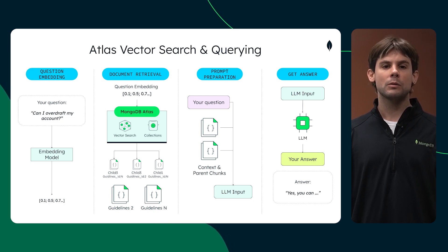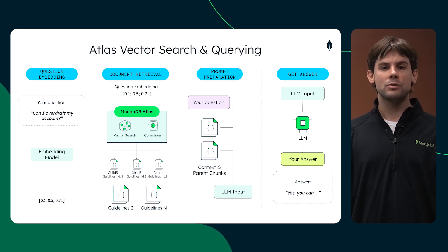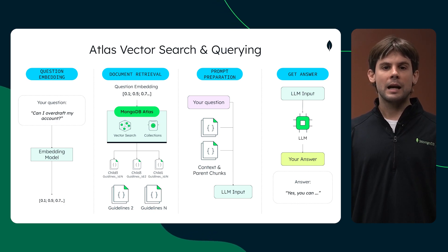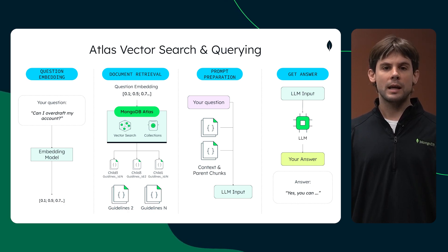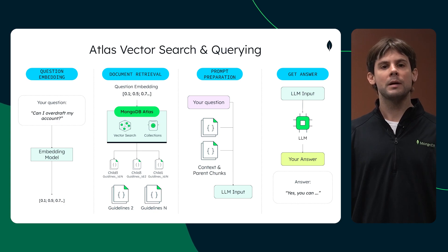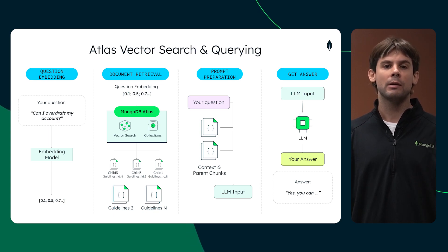MongoDB Vector Search is used to find documents with similar embeddings. Once relevant documents are retrieved, the next step is to send this data to a LLM. In this case, we use Amazon Bedrock as the large language model container. For this specific use case, we are leveraging Claude from Anthropic. The LLM receives both the question and the retrieved documents, using the documents as context to generate a more comprehensive and accurate response.